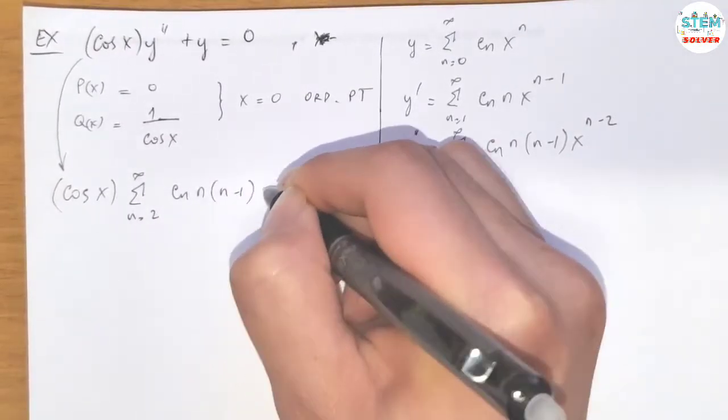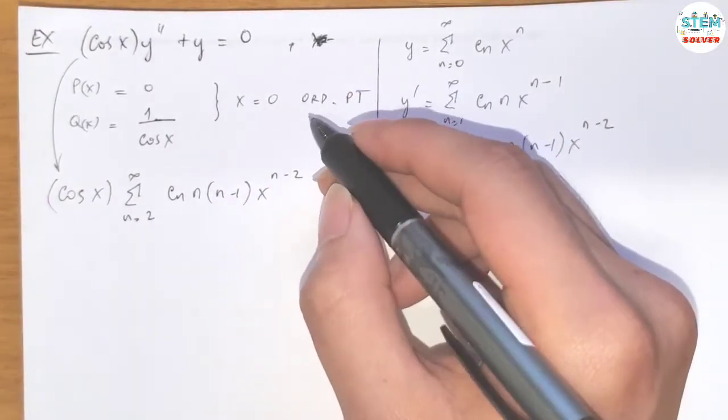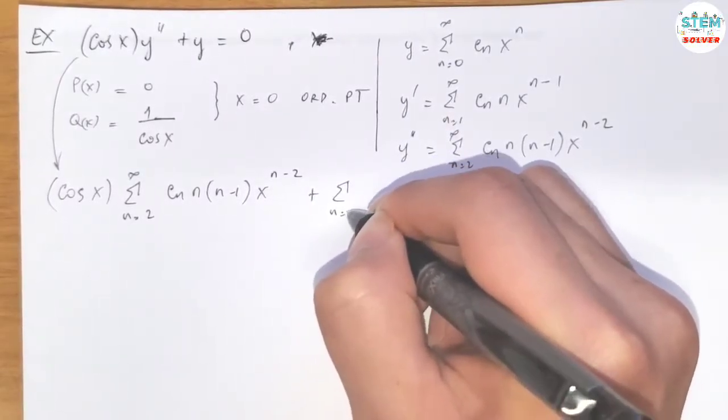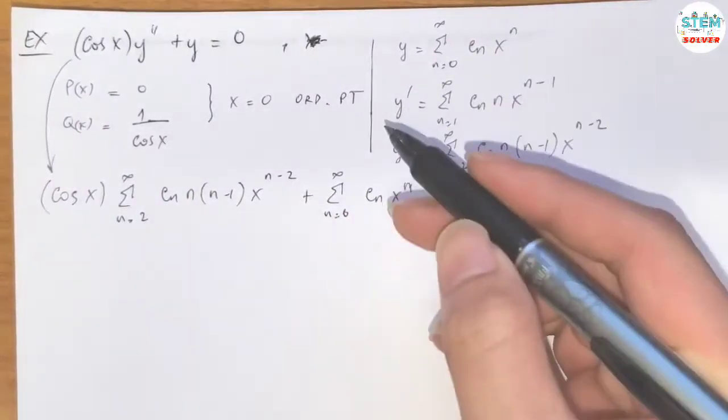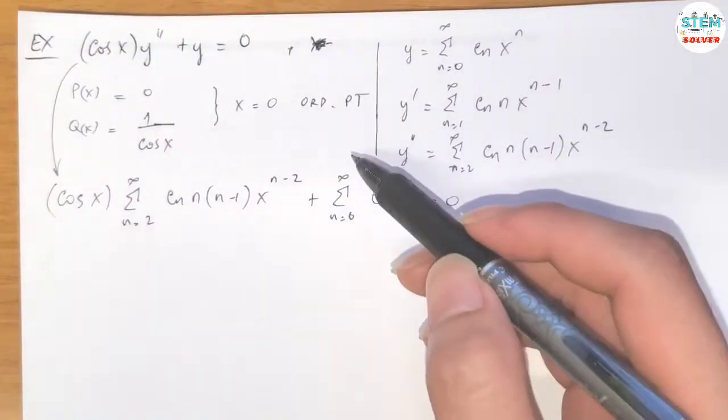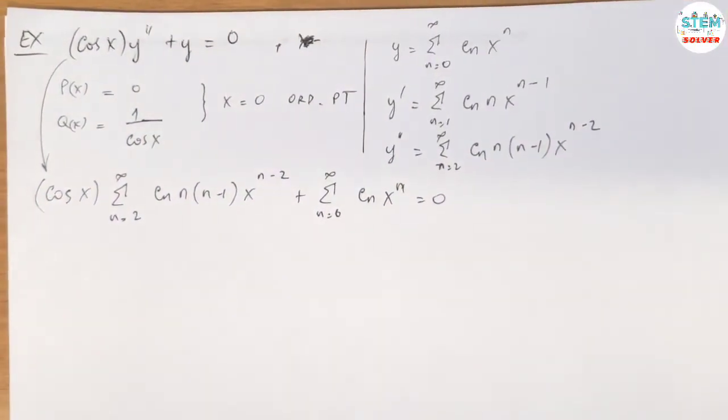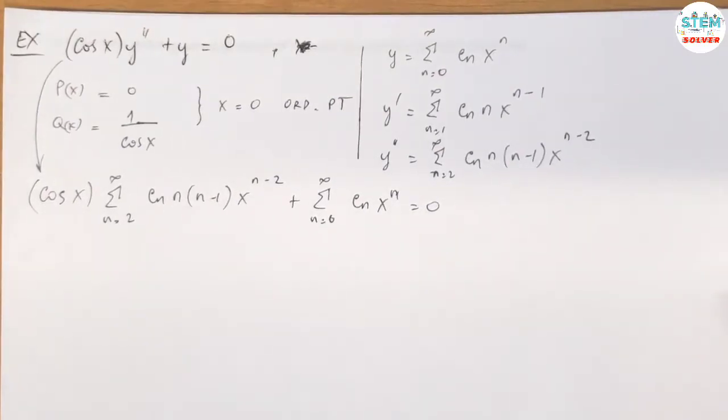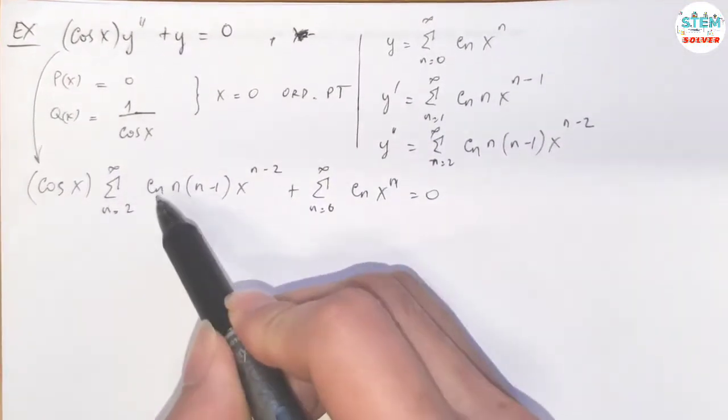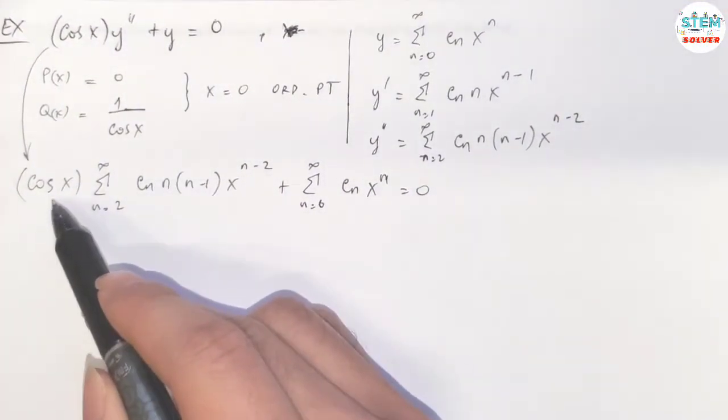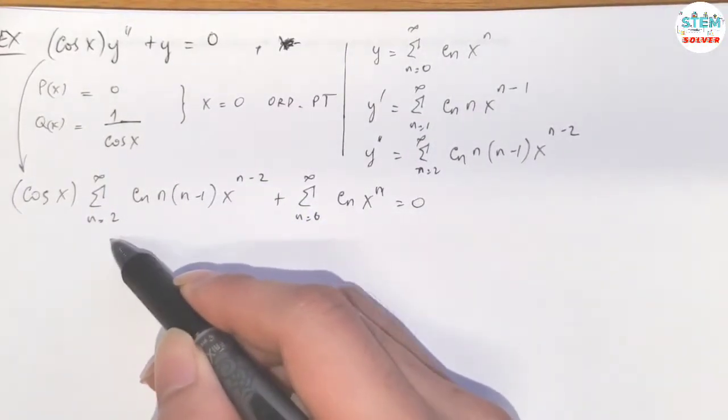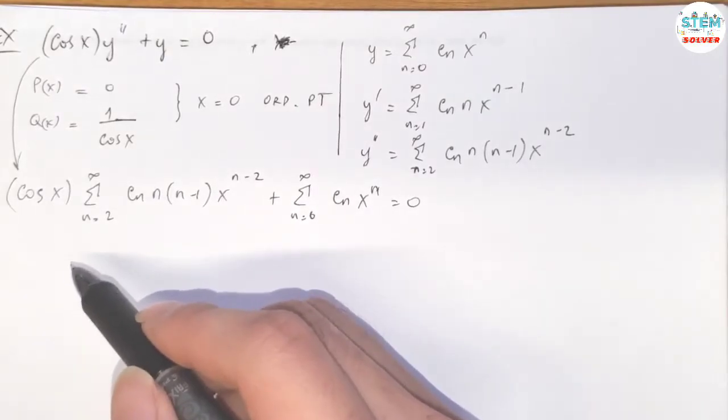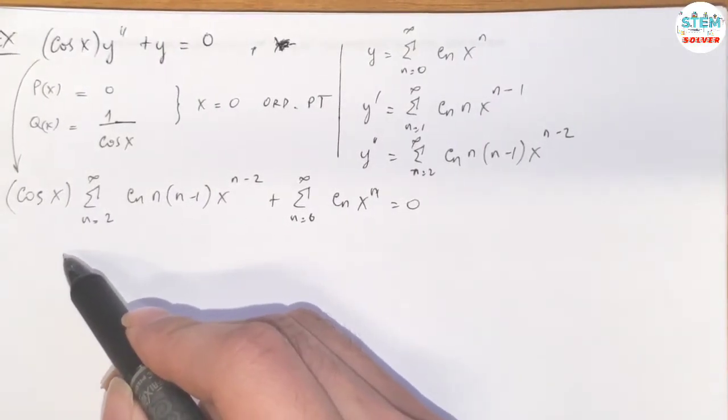Cos(x) times the sum C_n n(n-1) x to the n minus two plus power series from zero to infinity C_n x to the n equals zero. So we have a problem here. We multiply cos(x) to this, so you cannot multiply this into this one and then run out terms, then combine like terms and do whatever you did in the previous videos.